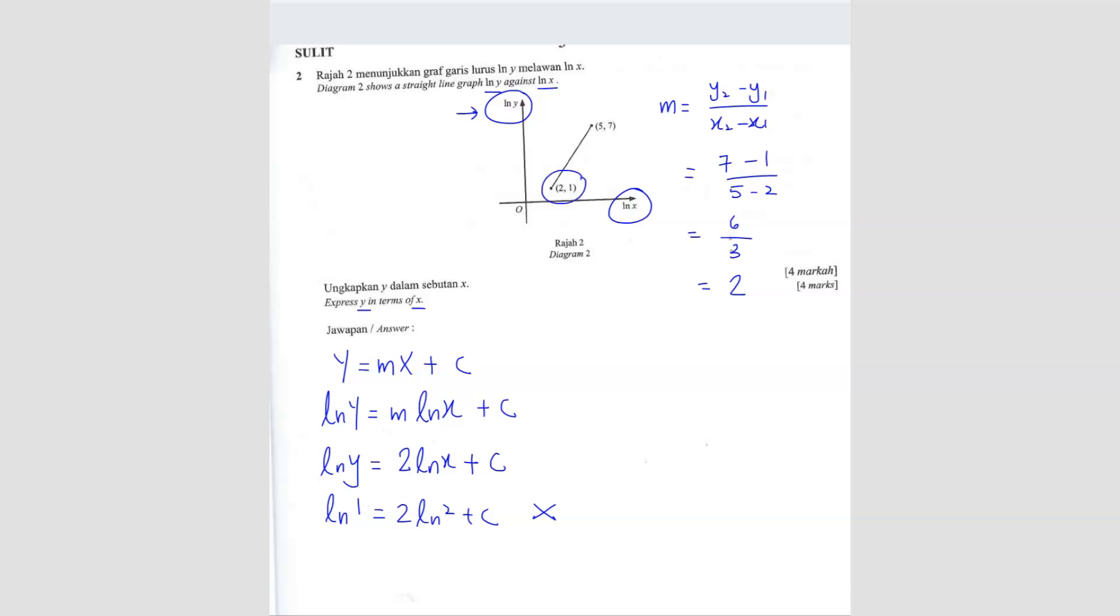Because this coordinate (2, 1) is in terms of ln x and ln y. So the value 2 represents ln x and the value 1 represents ln y. It's not x value and y value. It's ln x and ln y. So your equation is going to be 1 equals 2 times ln x is 2 plus c. So 1 equals 4 plus c, therefore c equals negative 3.